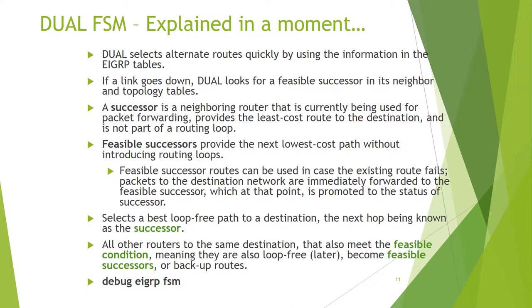DUAL selects alternate routes using information in the EIGRP topology table. If a link goes down, DUAL looks for a feasible successor in the neighbor and topology table. A successor is a neighboring router currently used for packet forwarding that provides the least-cost route to the destination and is not part of a routing loop. A feasible successor provides the next lowest cost path without producing a routing loop. If the existing route fails, packets are immediately forwarded to the feasible successor, which is then promoted to successor. All routes to the same destination that meet the feasibility condition are stored as feasible successors. Use the debug eigrp fsm command to observe this.